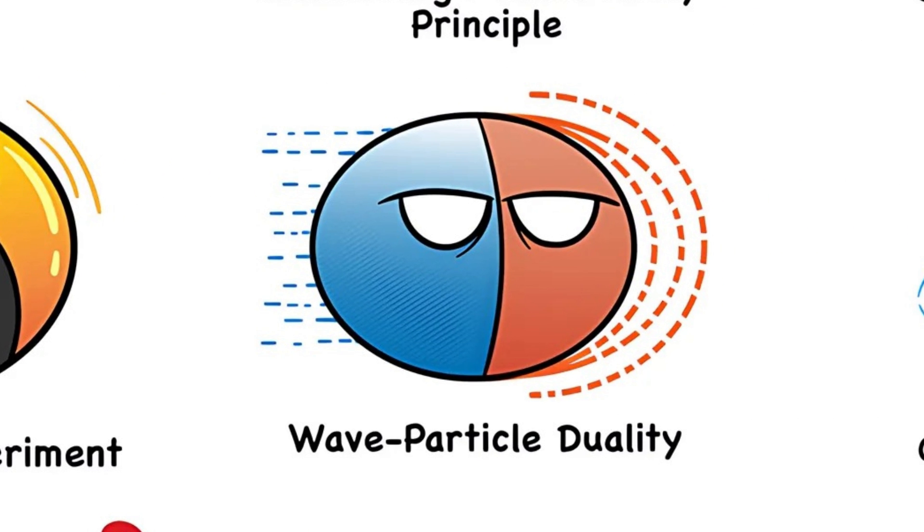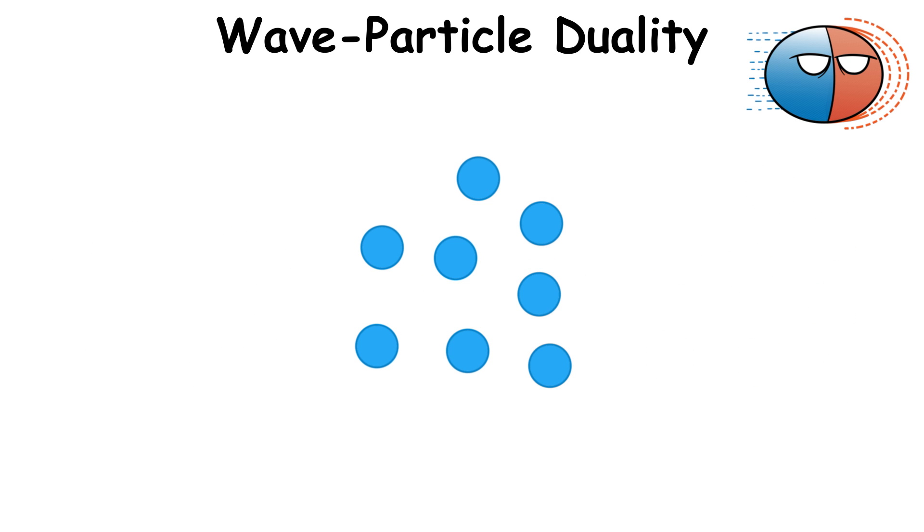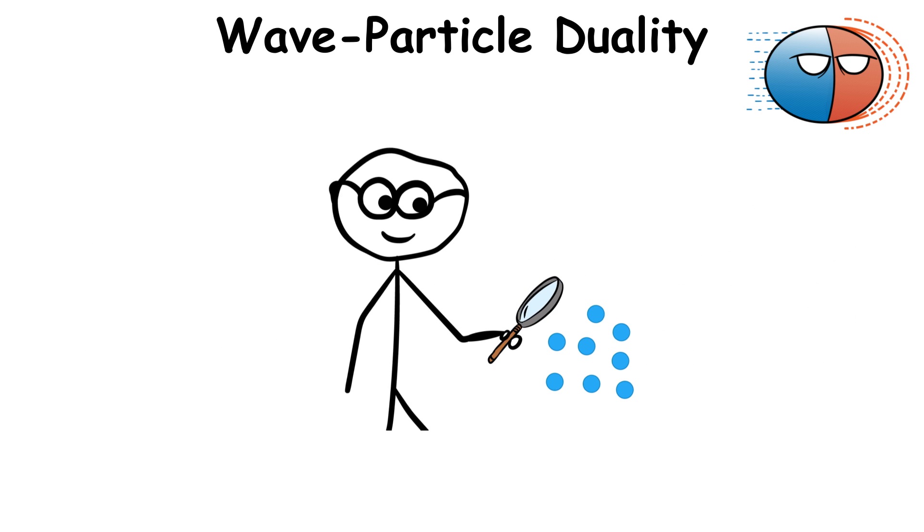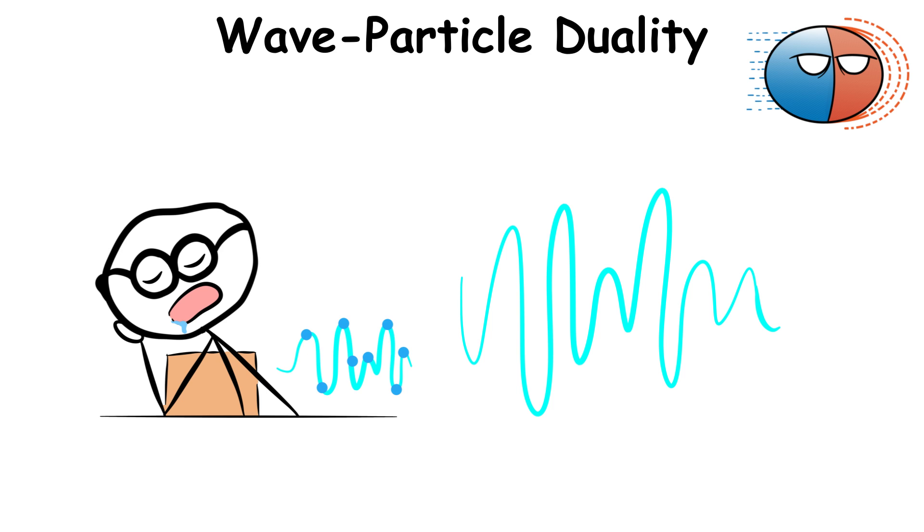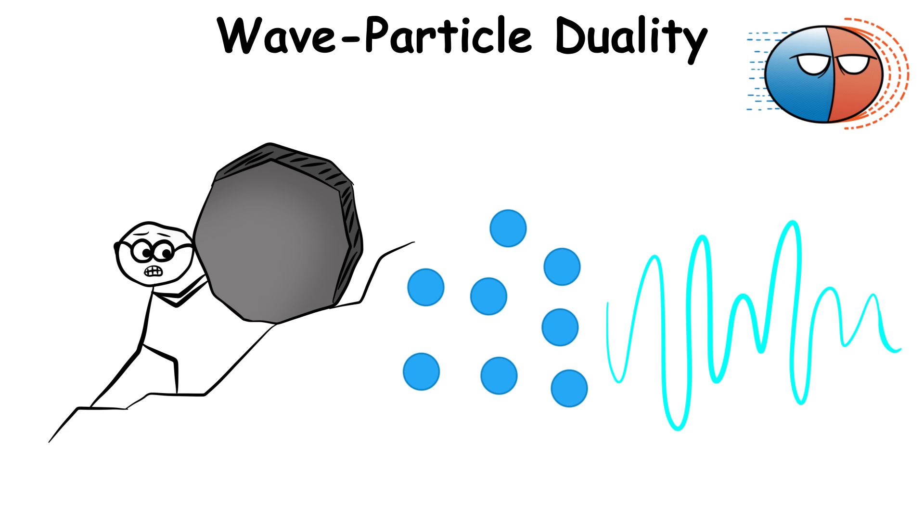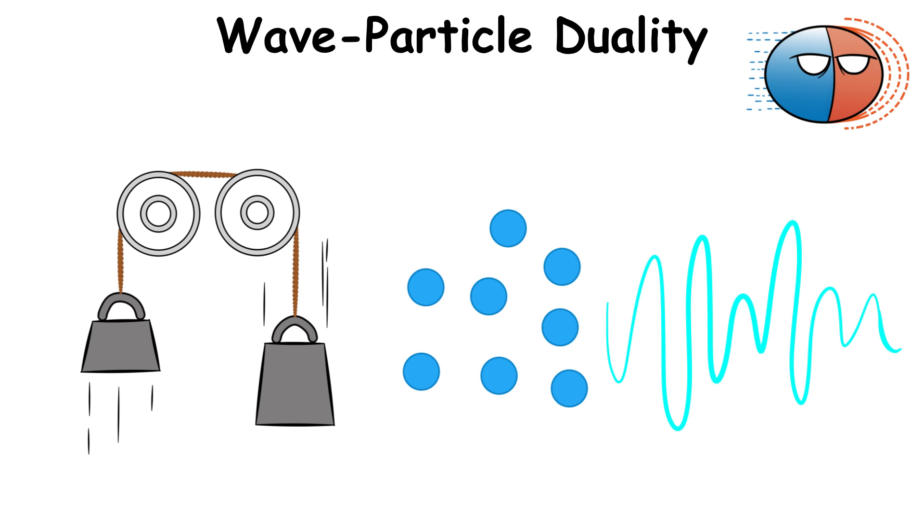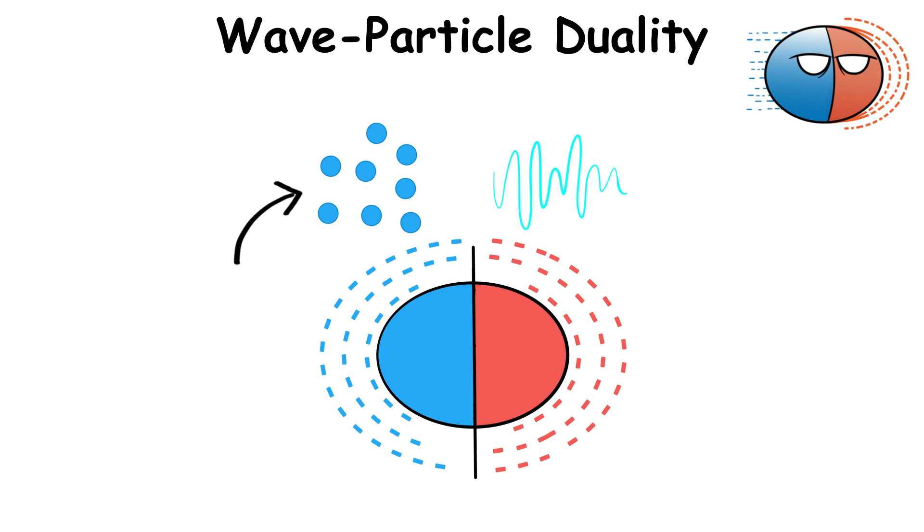Wave-particle duality. In the quantum realm, particles can showcase a dual nature. A particle behaves like a particle when observed, but when unobserved, it can display properties similar to a wave, exhibiting interference patterns. The challenging part here is that particles and waves are supposed to behave differently according to classical physics. However, in the quantum realm, particles have the dual properties of both a particle and a wave.